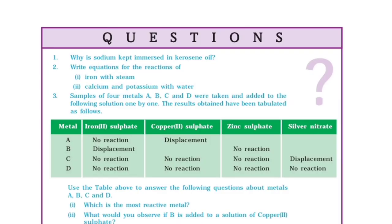Questions: (1) Why is sodium kept immersed in kerosene oil? (2) Write equations for the reactions of: iron with steam; calcium and potassium with water. (3) Samples of four metals A, B, C, and D were added to the following solutions one by one. The results have been tabulated — kindly observe the table from the book for more clarity.